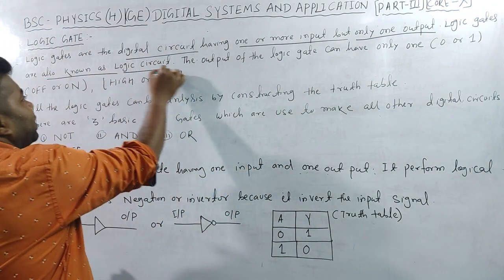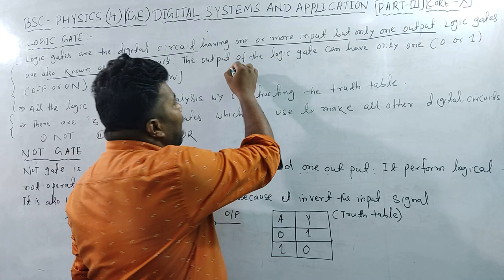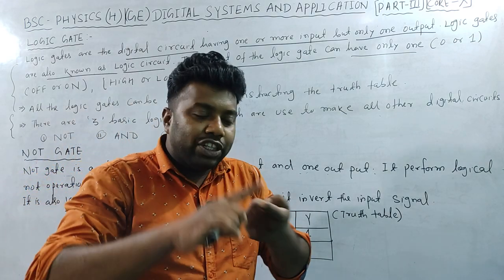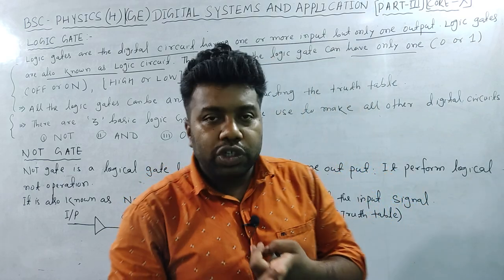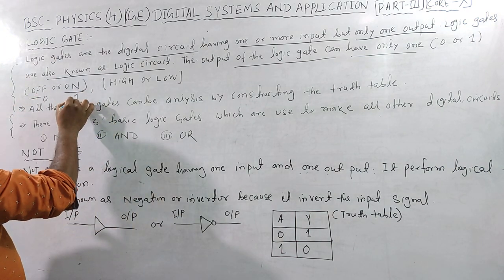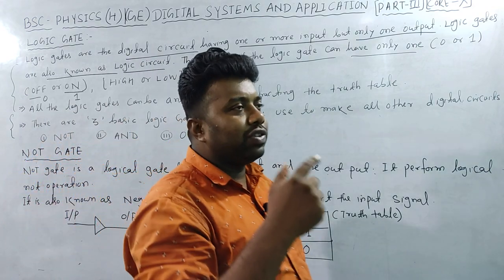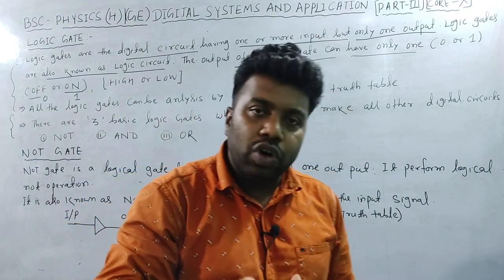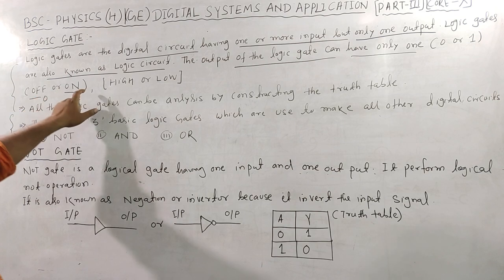The logic gates are also known as logic circuits. The output of the logic gate has only two states. The output is either zero or one. Zero is the off state, one is the on state.